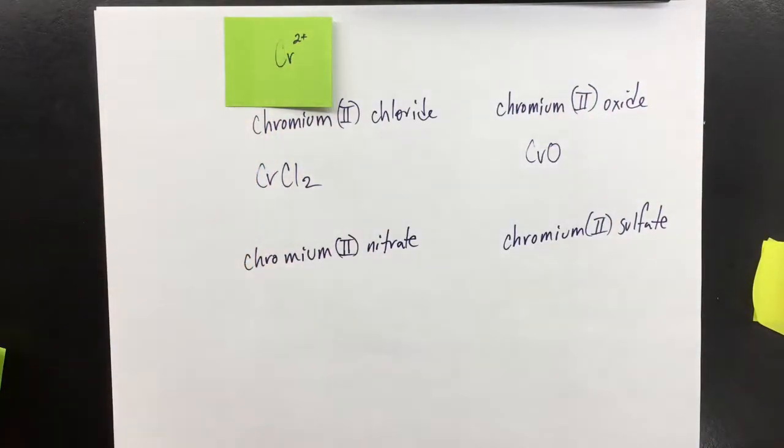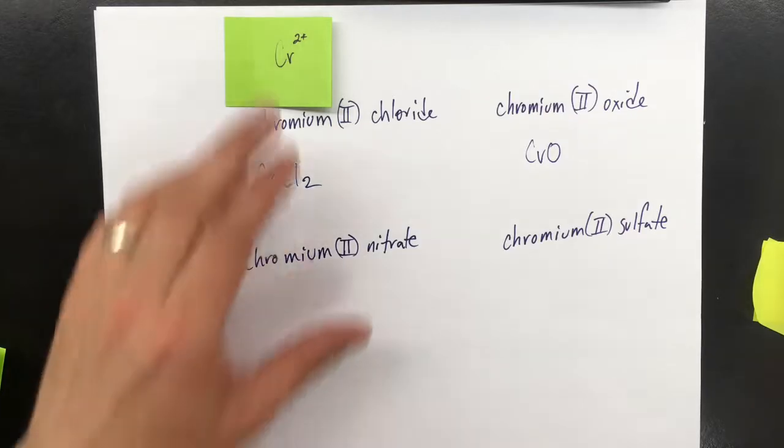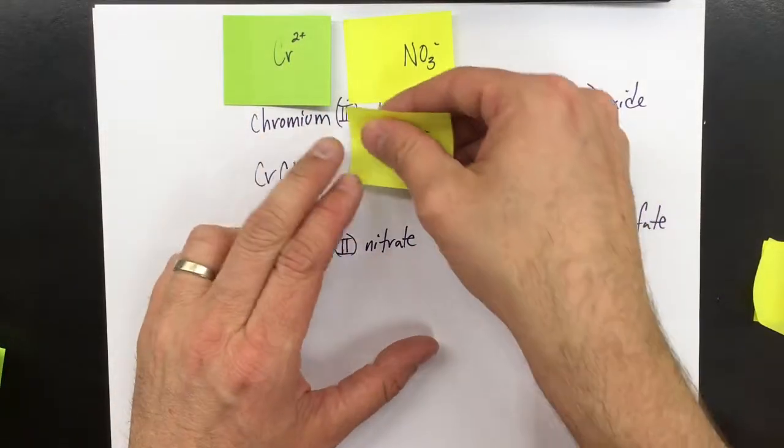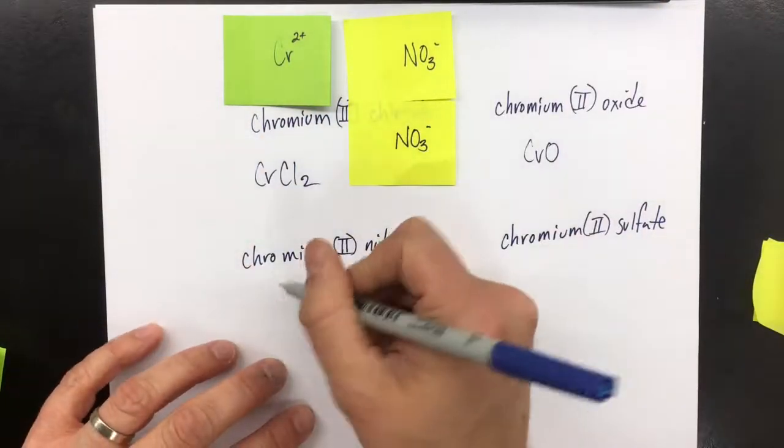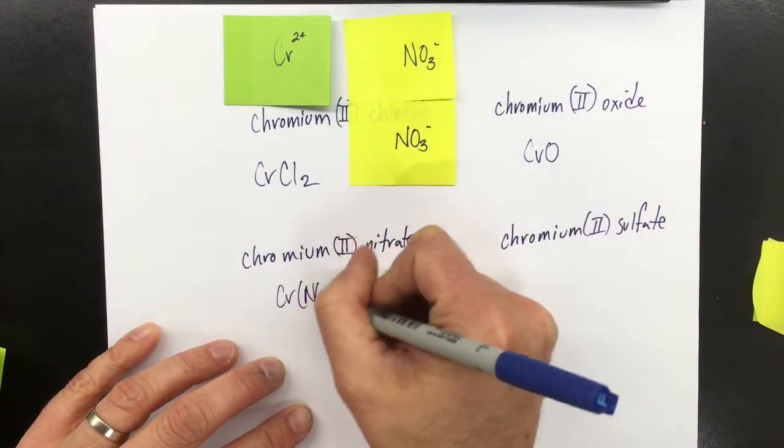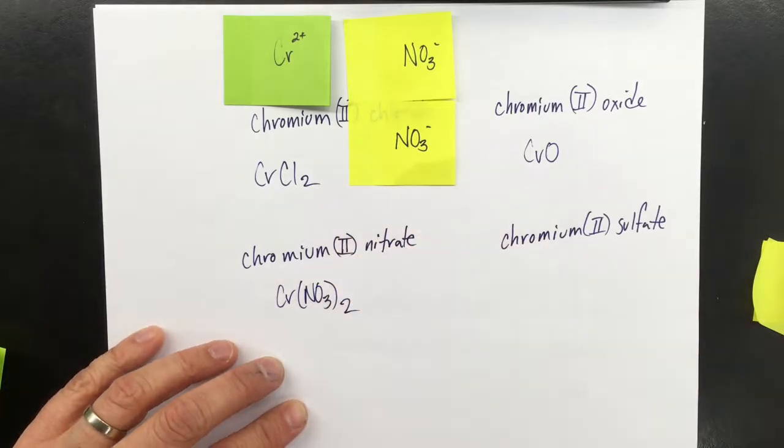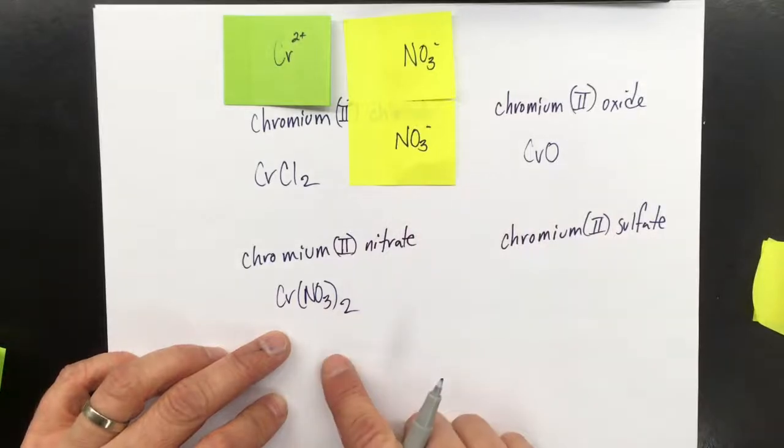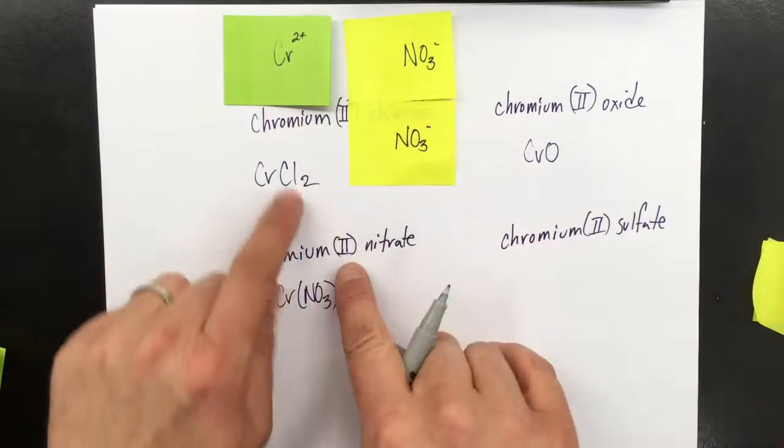Chromium(II) nitrate is going to work with my nitrates. I've got a 2+ charge, 1-. That's not enough because it's more positive than negative. Two negatives. This is Cr(NO3)2. That's what this represents. So this is chromium(II) nitrate. And the 2 has to do with its charge.